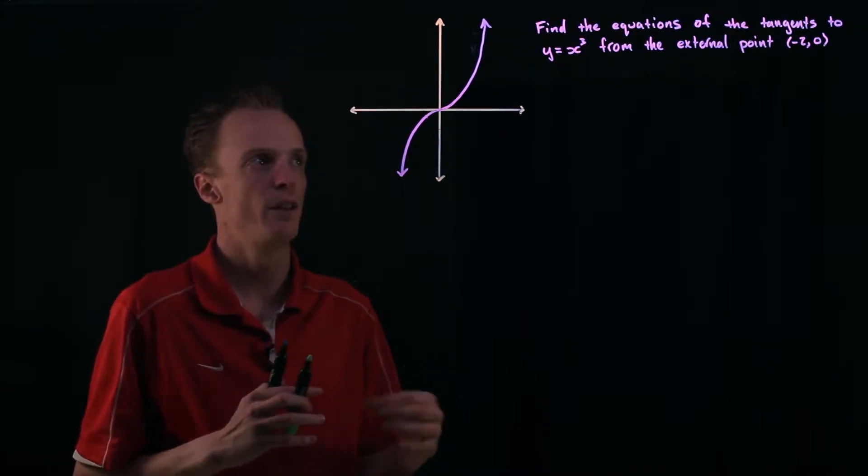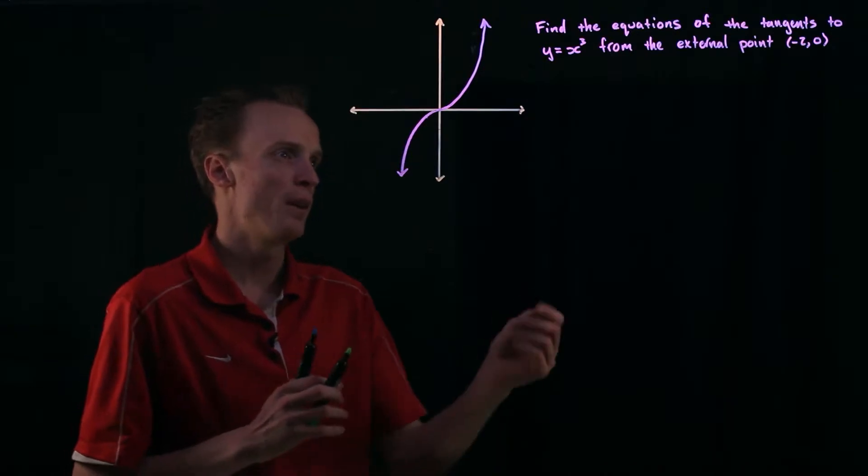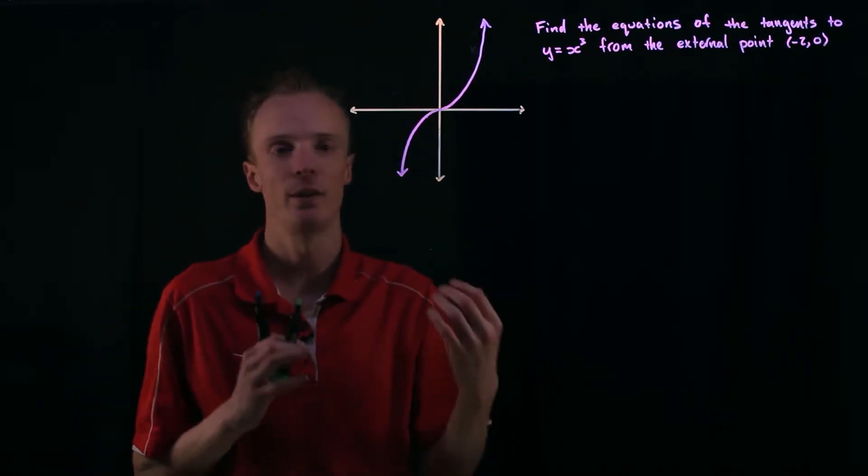So now let's look at how we might find the equation of a tangent if we're given an external point. Let's consider this function here, y equals x cubed.